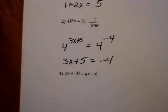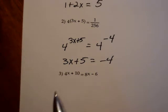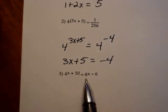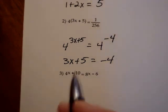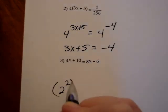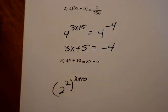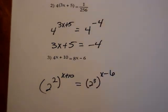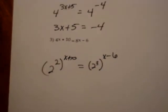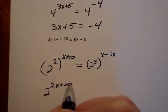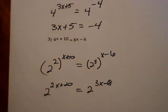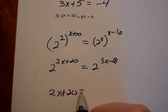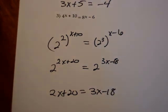Number 3 is a little more complicated. I could write 8 as 4 to some power, or 4 as 8 to some power, but instead we break them both down. They both have a base of 2: I rewrite 4 as 2 squared, and 4 was raised to the x plus 10 power. On the other side, 8 is 2 to the 3rd, raised to the x minus 6 power. Using exponent rules — a base raised to a power raised to another power means we multiply exponents — I get 2 to the 2x plus 20 equals 2 to the 3x minus 18. Now the bases are equal, so I equate the exponents and solve a linear equation.